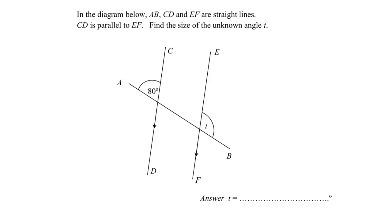Hello everyone, welcome to this video where we are given that ABCD and EF are all straight lines, and CD is parallel to EF. Find the size of the unknown angle T. Given this parallel line, I will be able to get that this corresponding angle is also 80 degrees — because they are corresponding angles.